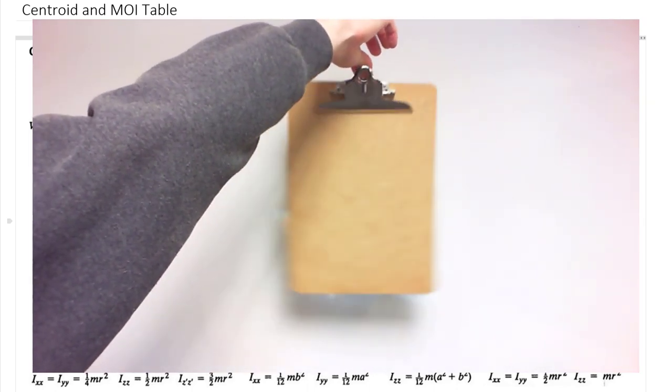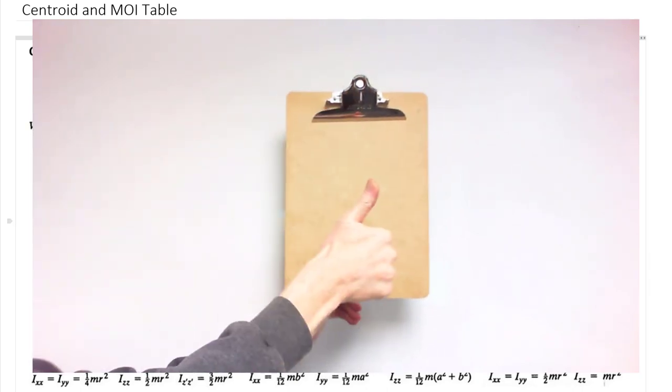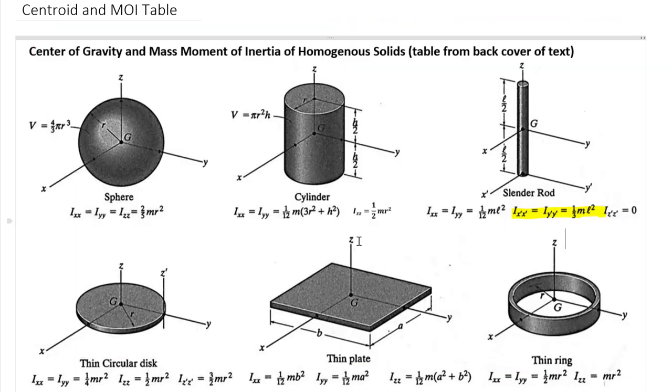So when you're faced with a composite body problem, you will need to visit this table and essentially pull different equations off of this table and use them in your composite body computations. Just make sure you analyze which is the correct axes—it's really key to make sure you pull the correct equation off of this table.